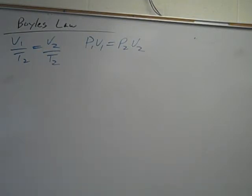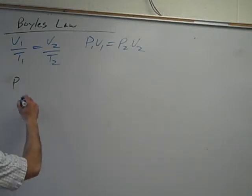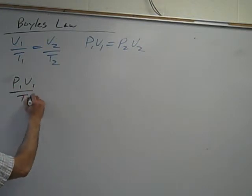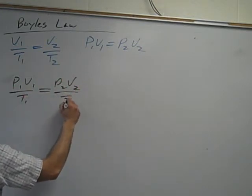Would it be V1 over temperature 1? It becomes, ooh, good catch. You already subtracted it? Yeah, we subtracted it a lot. Just in case. Alright, so it becomes P1, V1 over T1 is equal to P2, V2 over T2.